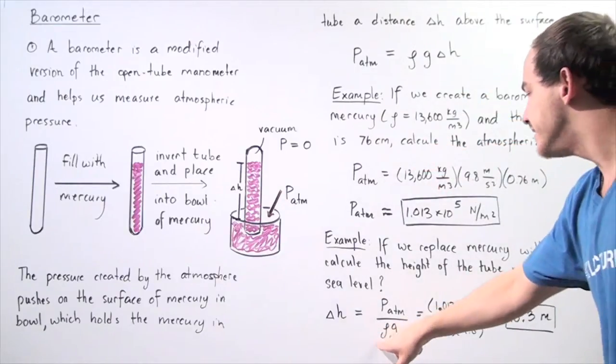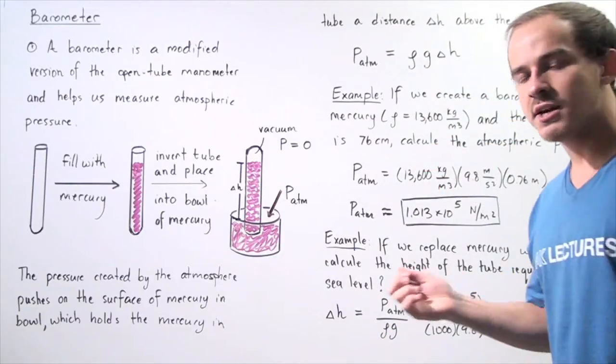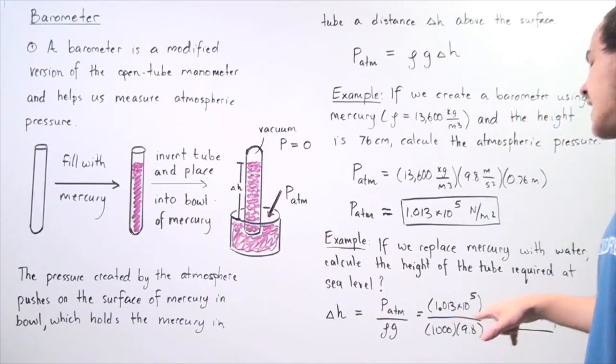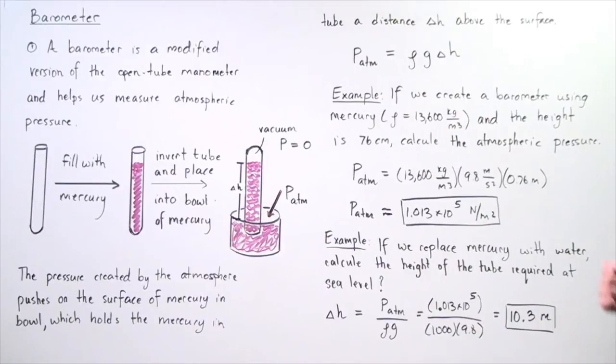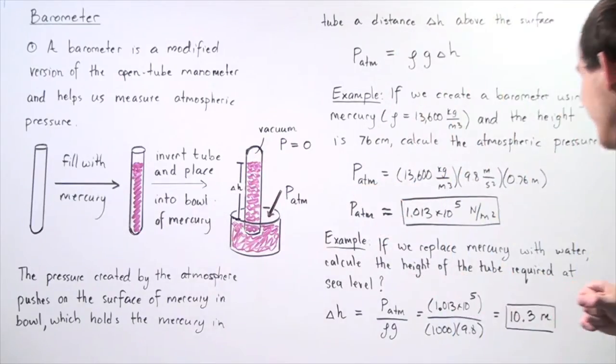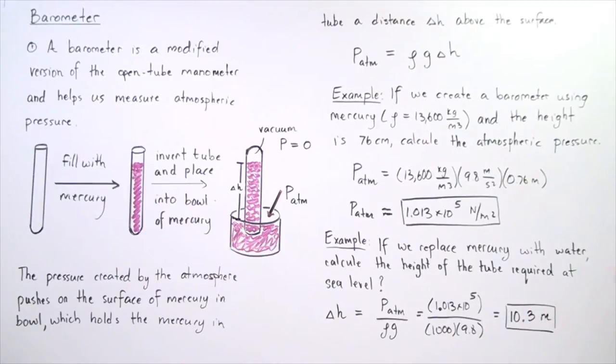multiplied by the gravitational constant, 9.8 meters per second squared. And we find that the height of this test tube is 10.3 meters.